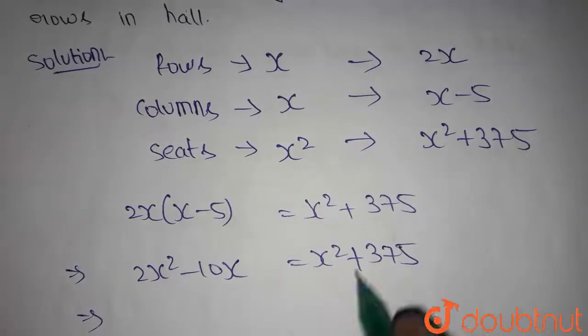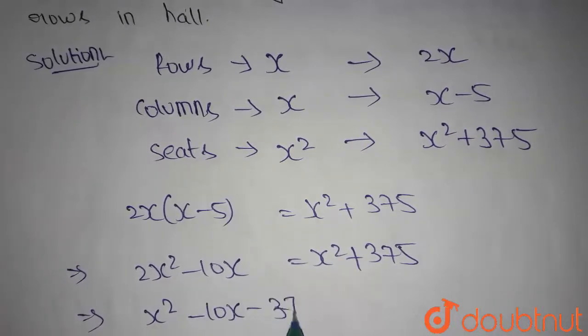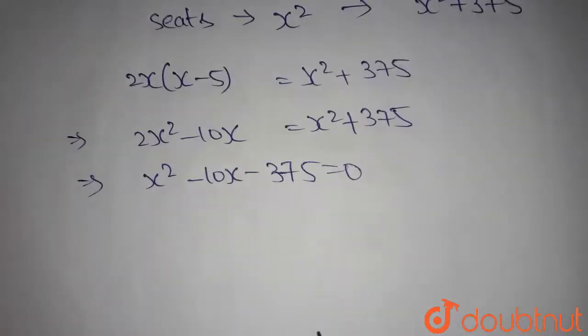If you take x squared and 375 into LHS, we get x squared minus 10x minus 375 is equals to 0. This is the quadratic equation.